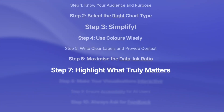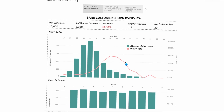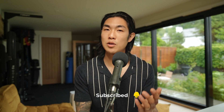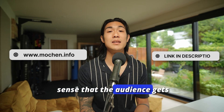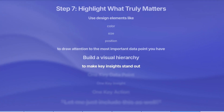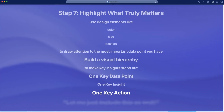Step seven: highlight what truly matters. Use design elements like color, size, and position to draw attention to the most important data point you have. Build a visual hierarchy to make key insights stand out and less critical information stay in the background. A huge mistake I see many professionals make is cramming as much information into one visual as possible, which is counterproductive — the audience gets completely lost. Ideally, you want one key data point, one key insight, one key action per visual for your viewers to focus on.